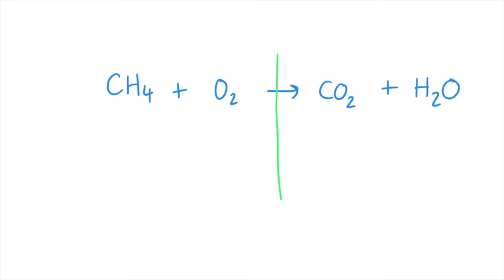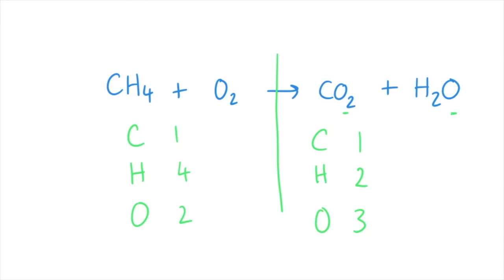Here we've got carbon, hydrogen, and oxygen — same on the other side. One carbon, four hydrogens, two oxygens on the left; one carbon, two hydrogens — and careful, oxygen appears in two places — three oxygens on the right. So a two in front of the water is going to sort the hydrogens out and it changes the oxygen as well, so we've now got four oxygens. Back to the left-hand side, we put a two in front of the oxygens, then we've got four. So everything's now balanced.